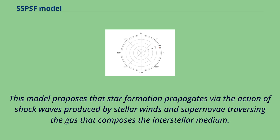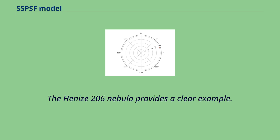This model proposes that star formation propagates via the action of shock waves produced by stellar winds and supernovae traversing the gas that composes the interstellar medium. The Hennus 206 nebula provides a clear example.